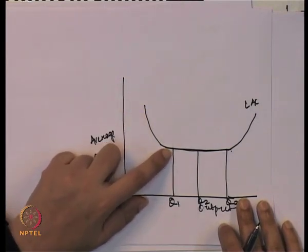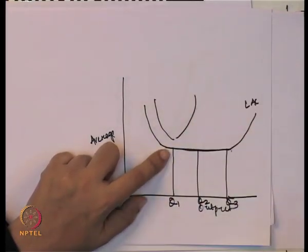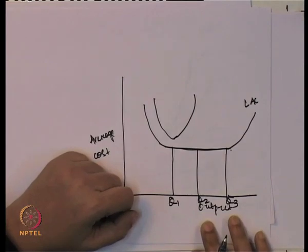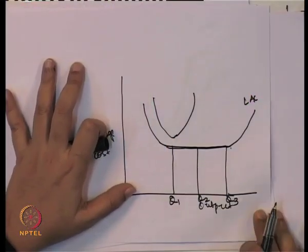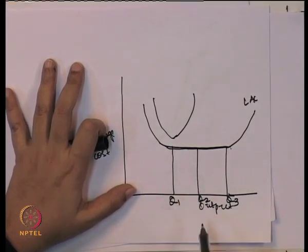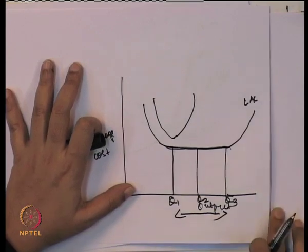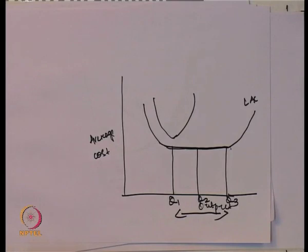Ideally, after the minimum point the curve should follow an increasing trend in the normal shape. But here the minimum point is extended over a range of production, implying that at the same minimum cost the firm has moved from Q1 to Q3 units of output. In the real world, this may be difficult to find, but it could occur in batch production where the same level of cost is used for a specific batch.